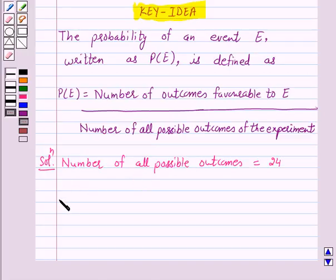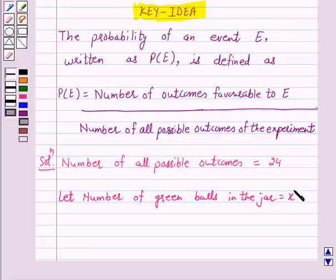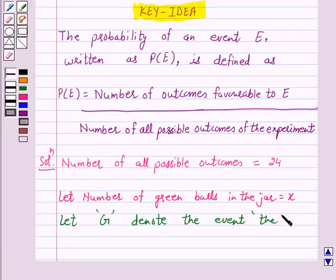Let number of green balls in the jar is equal to x. Let G denote the event the ball is green.